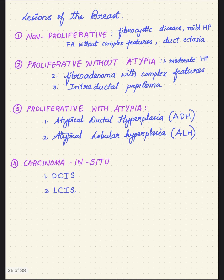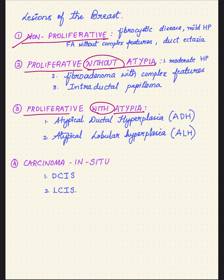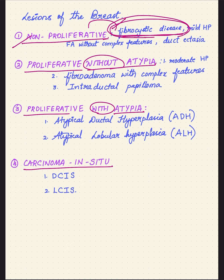Let us classify the lesions of the breast before we begin fibrocystic disease. The lesions can be classified as non-proliferative, proliferative without atypia, proliferative with atypia, and carcinoma in situ. Non-proliferative breast lesions include fibrocystic disease, mild hyperplasia, fibroadenoma without complex features like calcification, and duct ectasia — that is duct dilatation.